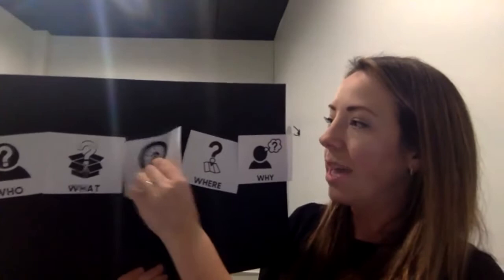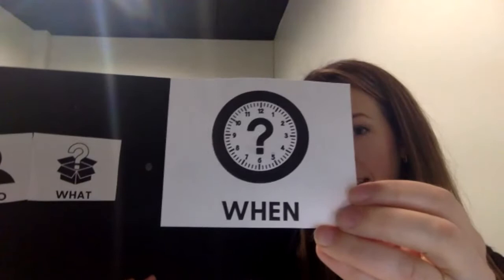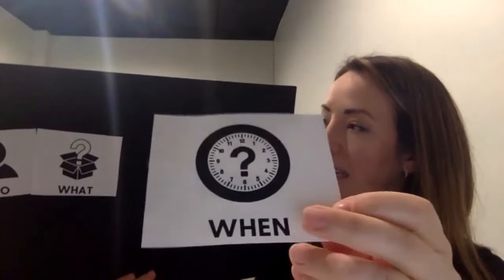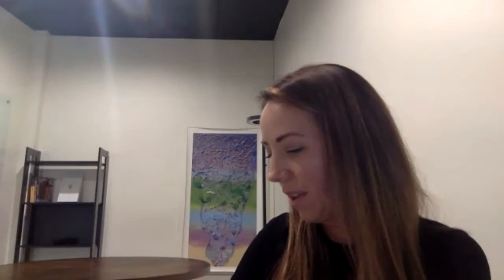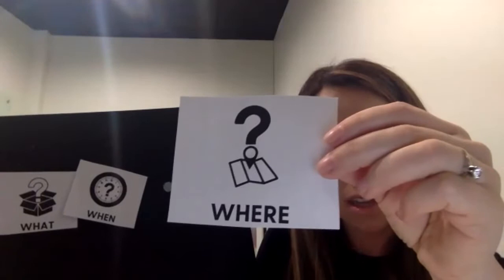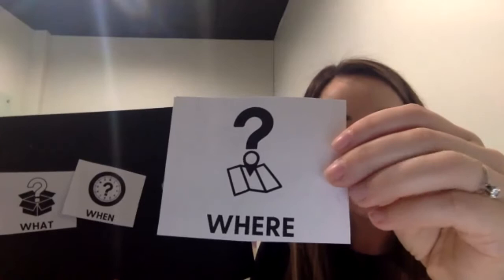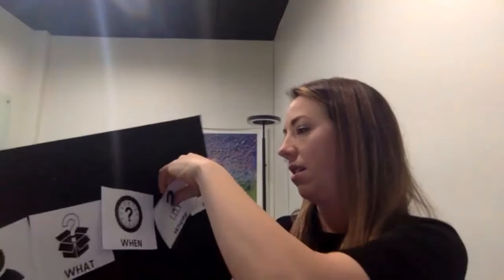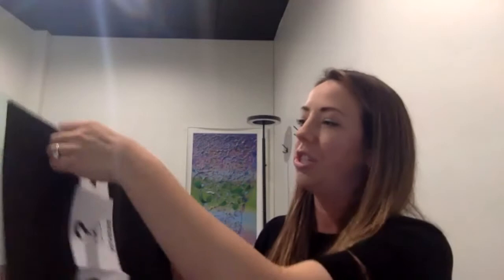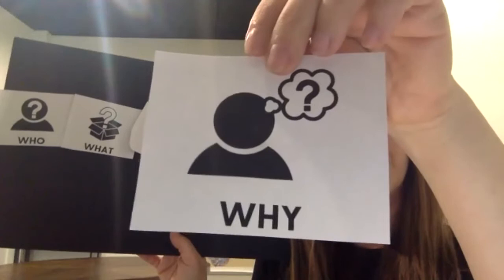The next WH question is 'when.' It has the word 'when' on the bottom and a clock with a question mark in the middle — 'When do we use a personal passport?' The next one is 'where,' and it has a picture of what looks like a map or trying to figure out where you're at, with a question mark on it. And the last WH question is 'why,' and it has a person with a think bubble — they're thinking — and it has a question mark in there. 'Why are we doing this today?'